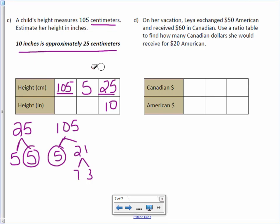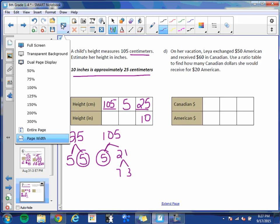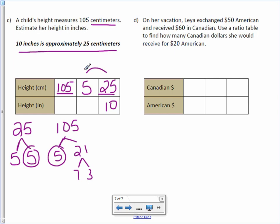To get from 25 to 5, we divide by 5. So we're going to divide by 5 here to get 2. Then to get from 5 to 105, we actually multiplied by 21. So we're going to do the same here, times 21. 2 times 21 is 42. So approximately 42 inches.